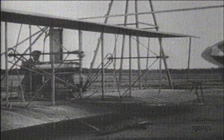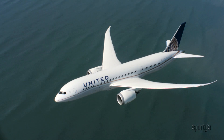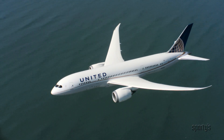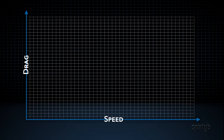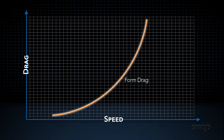Comparing a Wright Flyer with today's modern jets, one realizes that without streamlining, high cruise speeds would not be possible. At relatively low subsonic speeds, form drag increases approximately as the square of the speed. Put another way, if airspeed is doubled and other factors are not changed, the form drag quadruples.